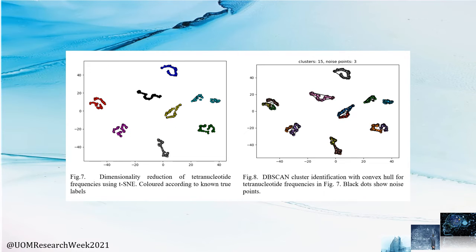What you see here is the T-SNE representation of the same data. As you can see, the species are arbitrarily located and it does not give any inferences on the taxonomic relationships among these species. While these two are actually from the same genus, that is not shown in the T-SNE representation.